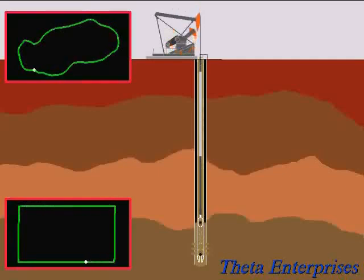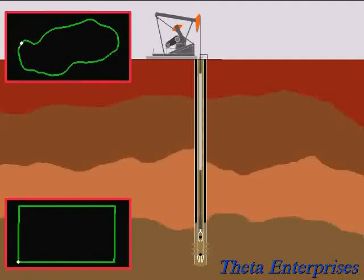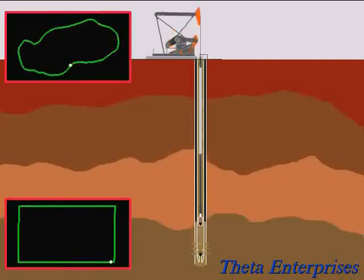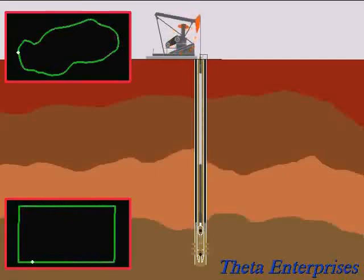Now, the stretch of the rods means that when the polish rod moves up, the plunger doesn't move up at the same time — you can see that here. When the polish rod starts to move up, the rods have to stretch first before the plunger moves up. In this case, because we have fiberglass rods with steel on the bottom, the polish rod has to travel all the way up — about halfway on the upstroke — before the plunger starts to move.